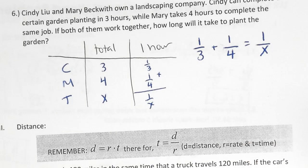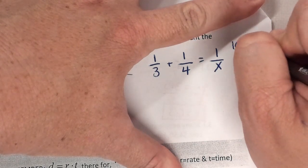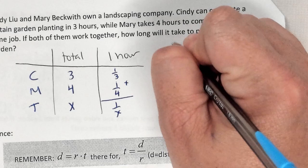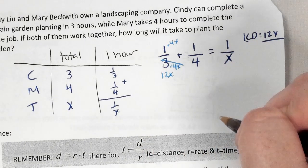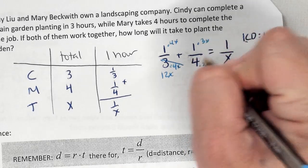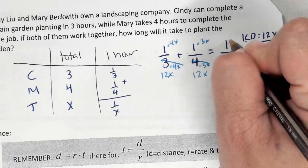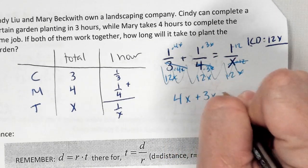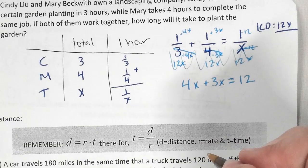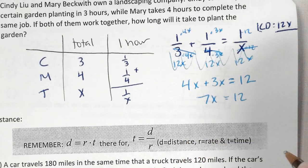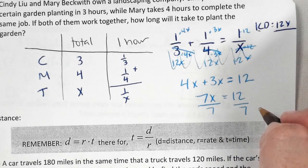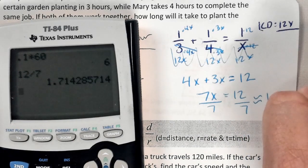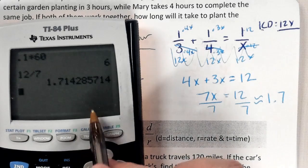What is my LCD going to be here? Yeah, 12X. So how do I turn a three into a 12X? Times 4X, top and bottom. And that gives me 12X. How do I turn a four into a 12X? Times 3X, top and bottom. How do I turn an X? Times 12. Do my denominators match? So now we have 4X plus 3X equals 12. What's 4X plus 3X? 7X. Now what? Divide by 7. And we get 1.7. This is a really ugly fraction. So we're going to simplify as a decimal because we have to turn this into hours and minutes.